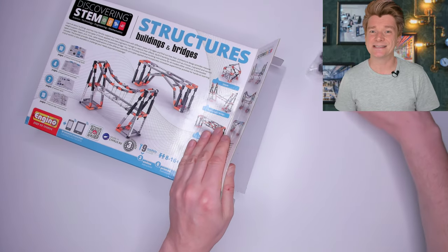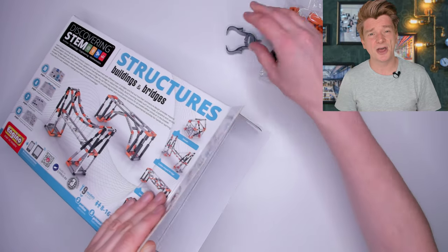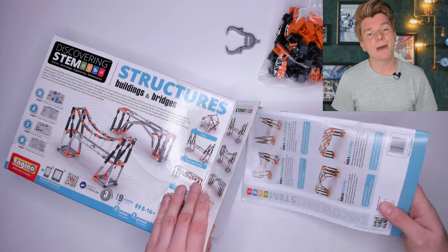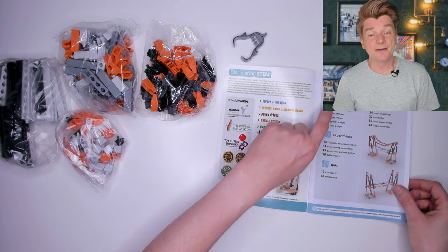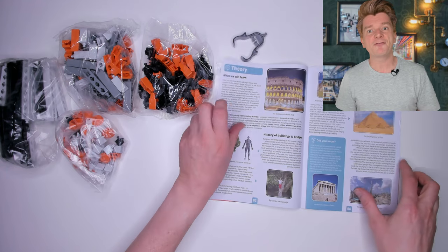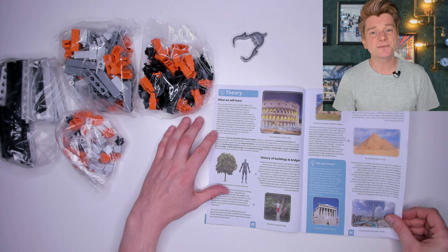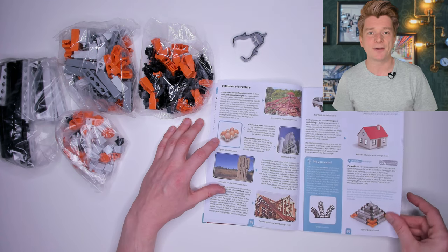Inside we have pieces of bridge, what looks like a removal tool so you don't hurt your fingers, an instruction manual and lots more pieces. The manual looks good, it's got some information about bridges and history, shows you the types of bridges and the theory around how they work.